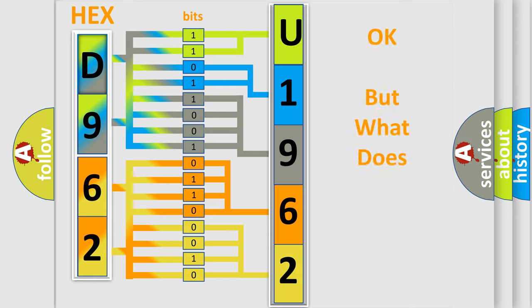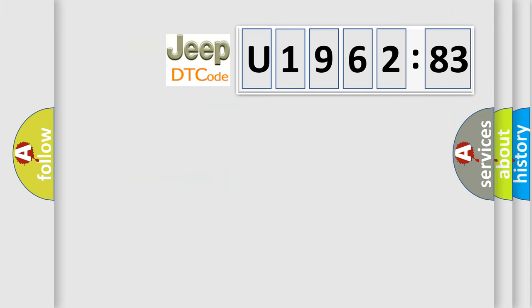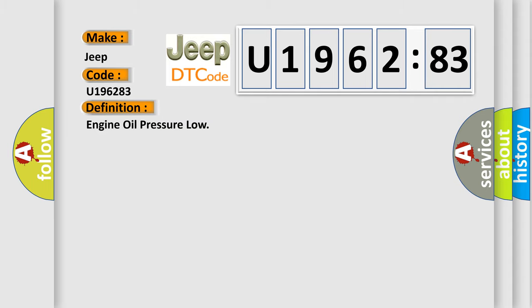The number itself does not make sense to us if we cannot assign information about what it actually expresses. So, what does the diagnostic trouble code U196283 interpret specifically for Jeep car manufacturers? The basic definition is: Engine oil pressure low.